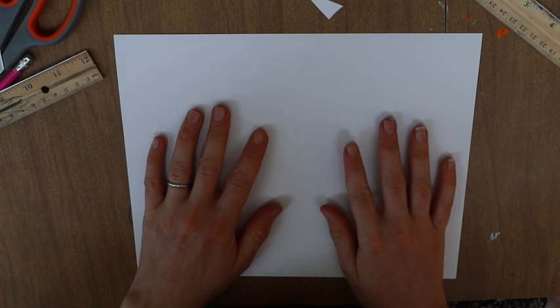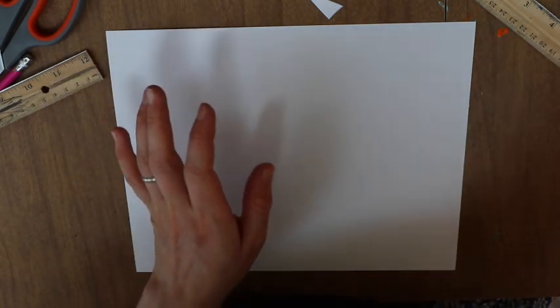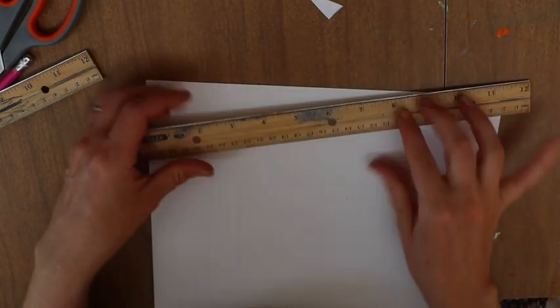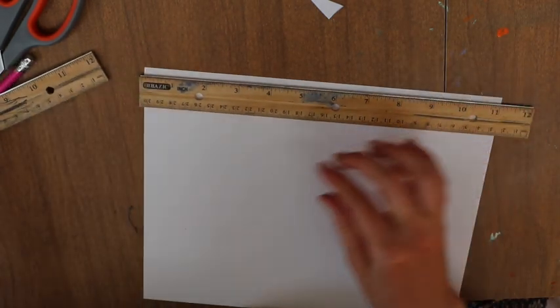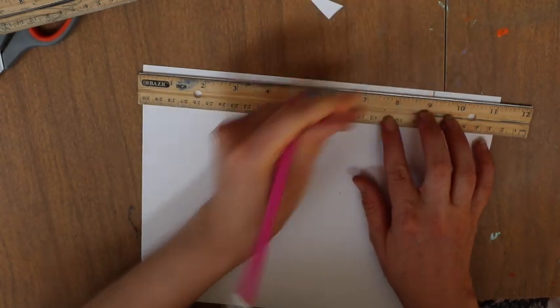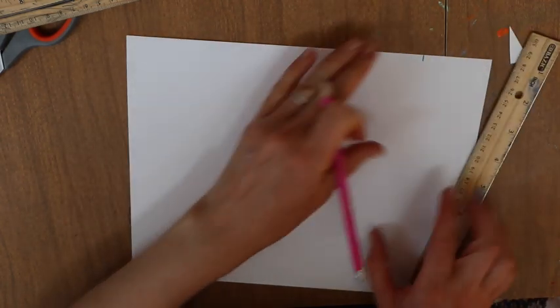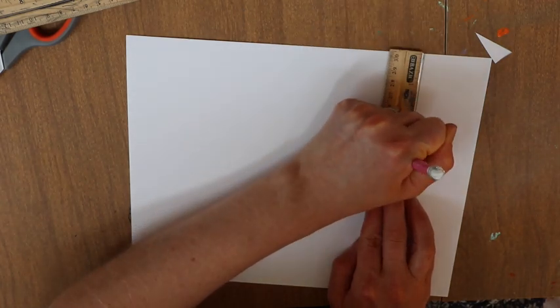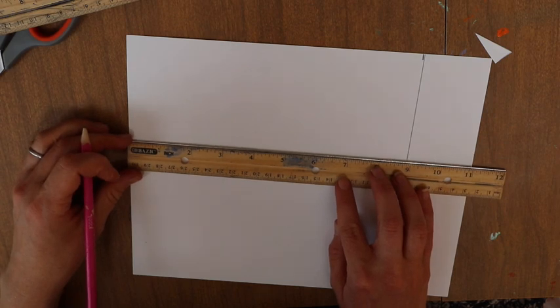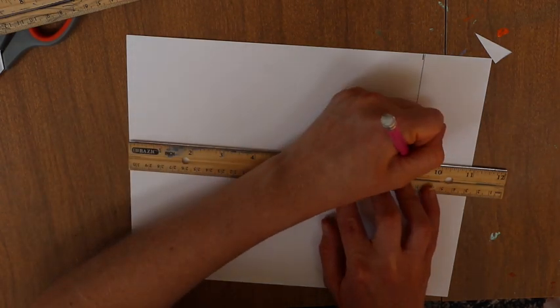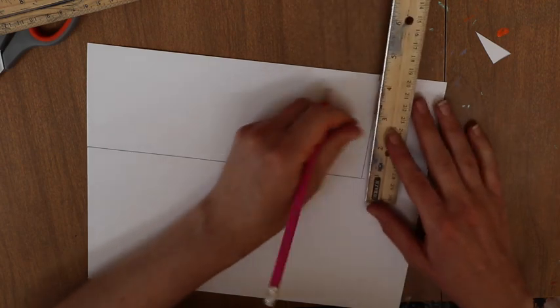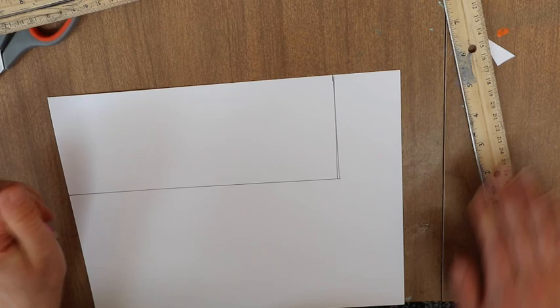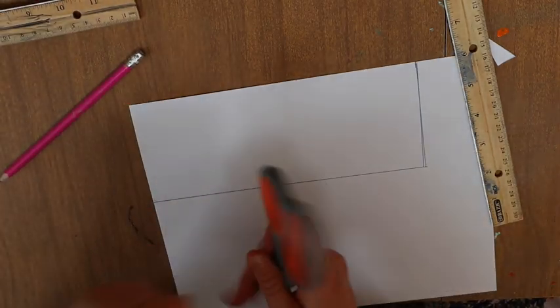So I'm taking some cardstock and we're going to cut a rectangle that is three and a half by nine inches. There's nine. I'm going to go down three and a half and across nine. And now we're going to cut this out.